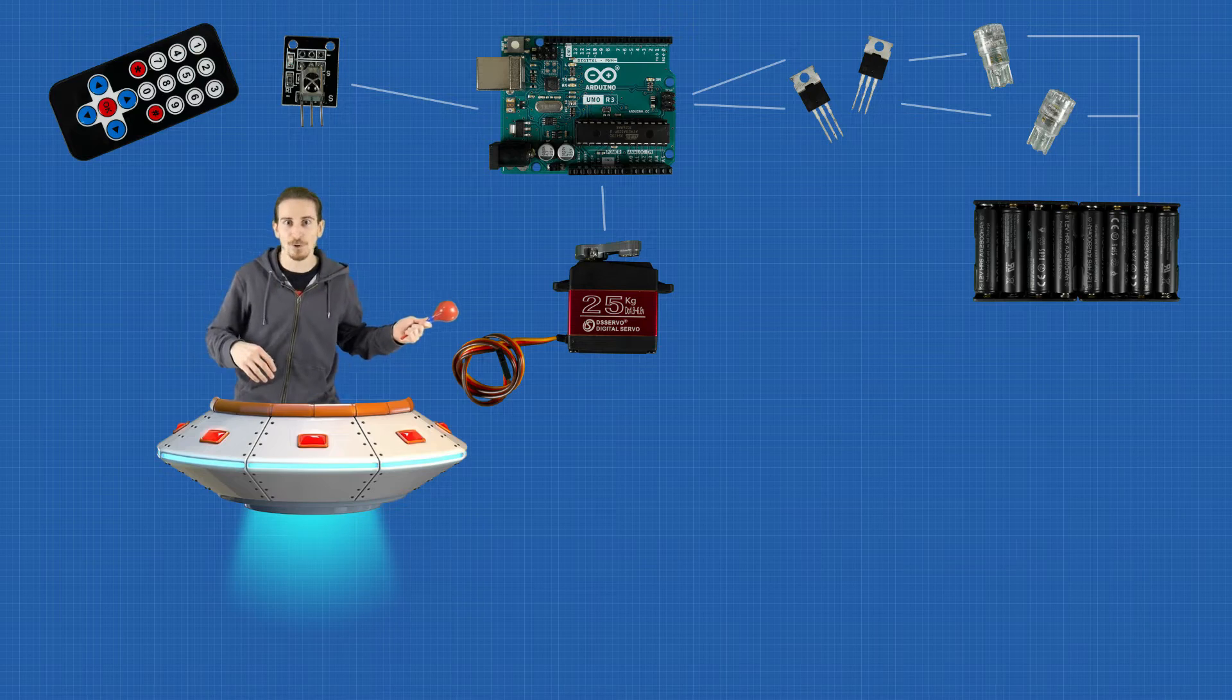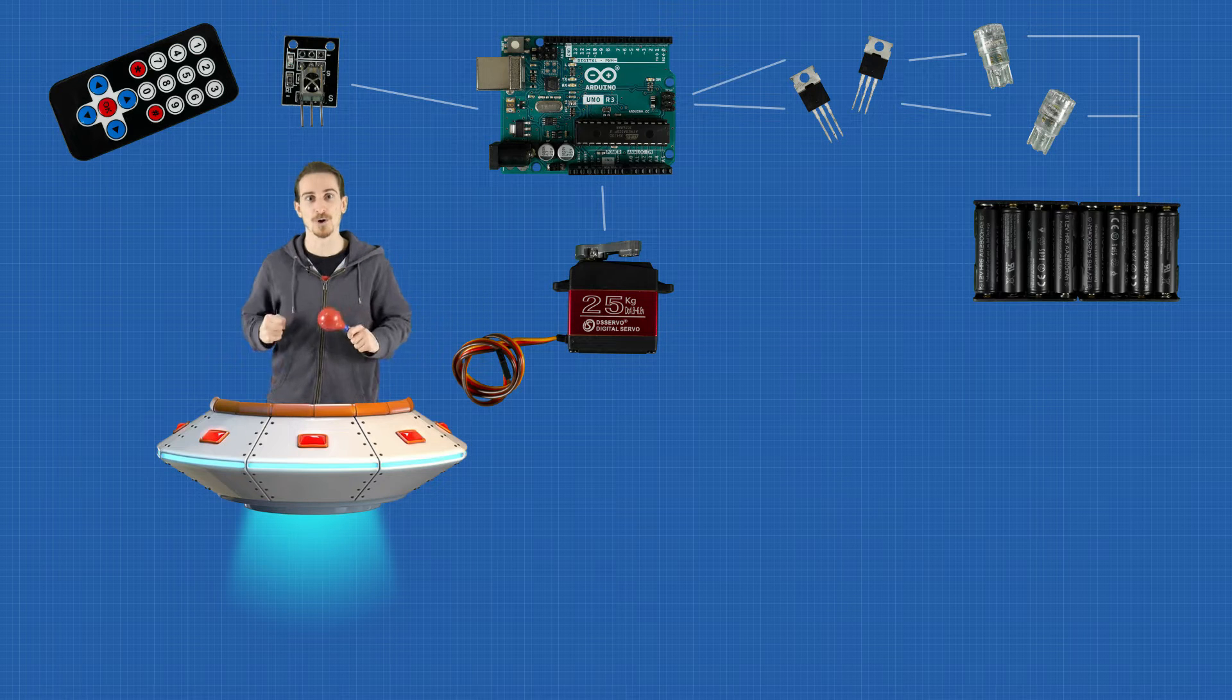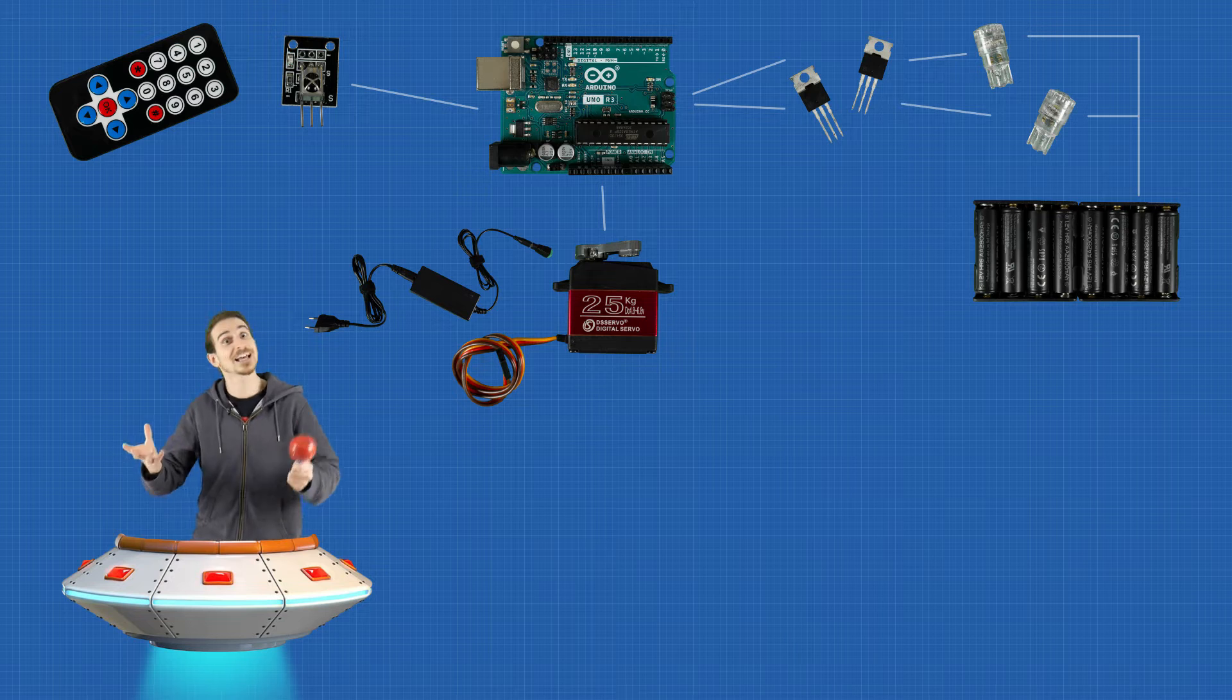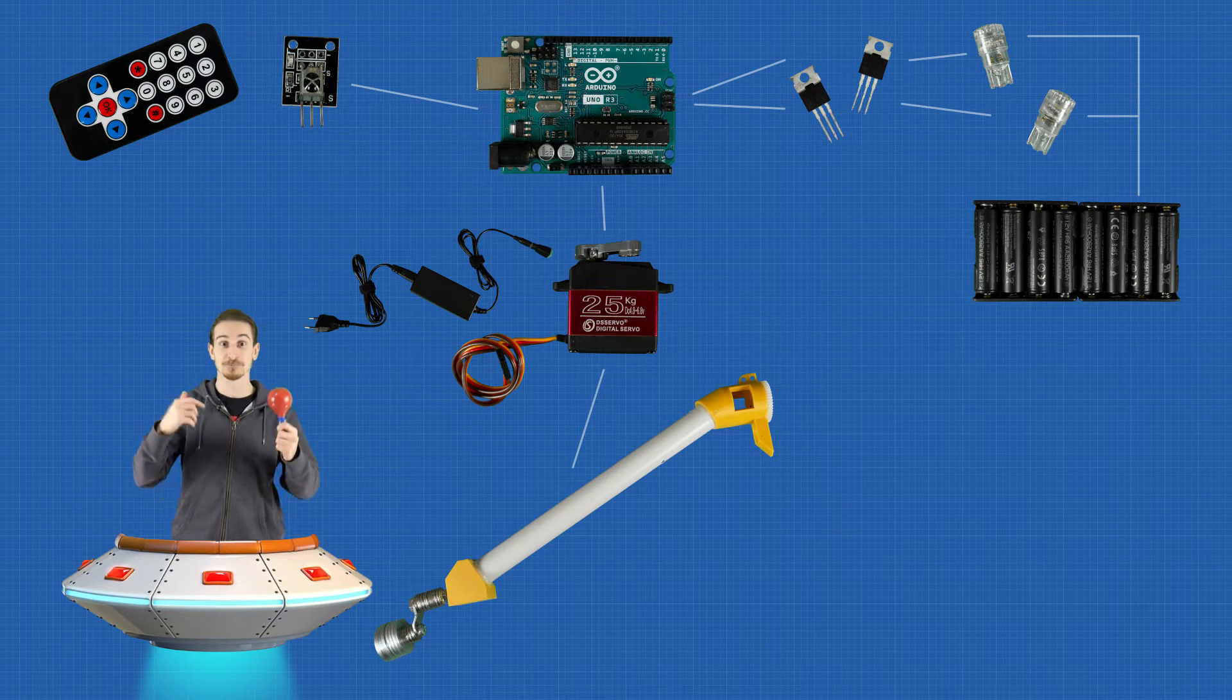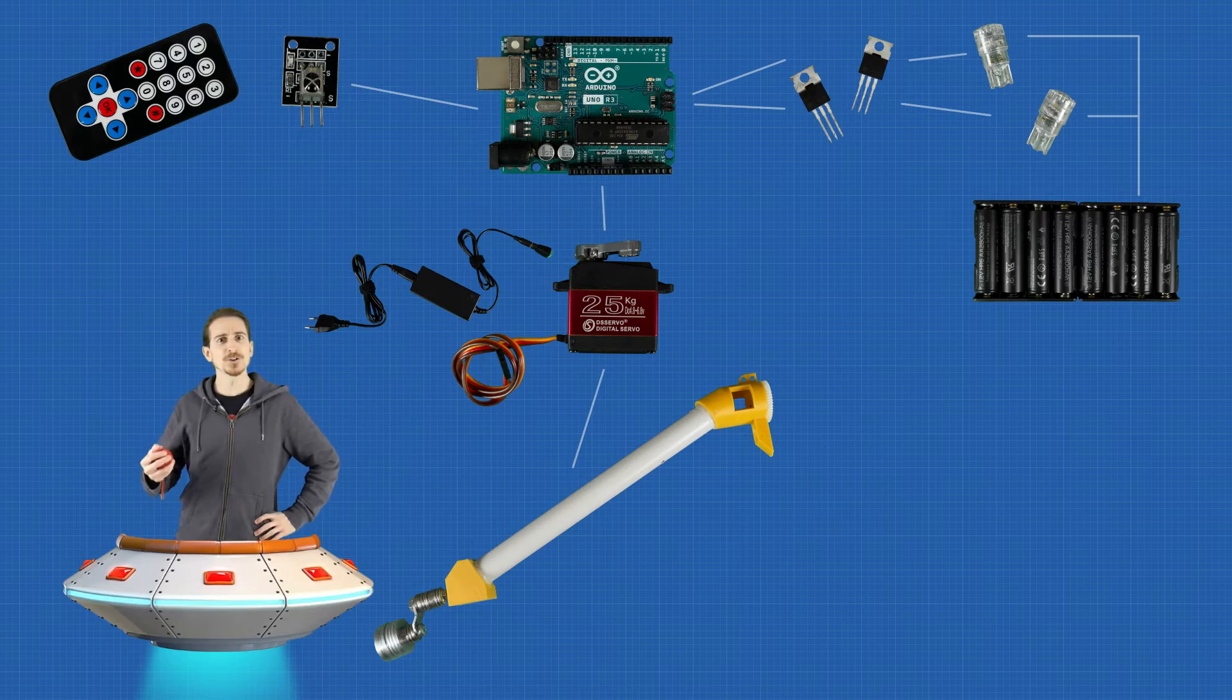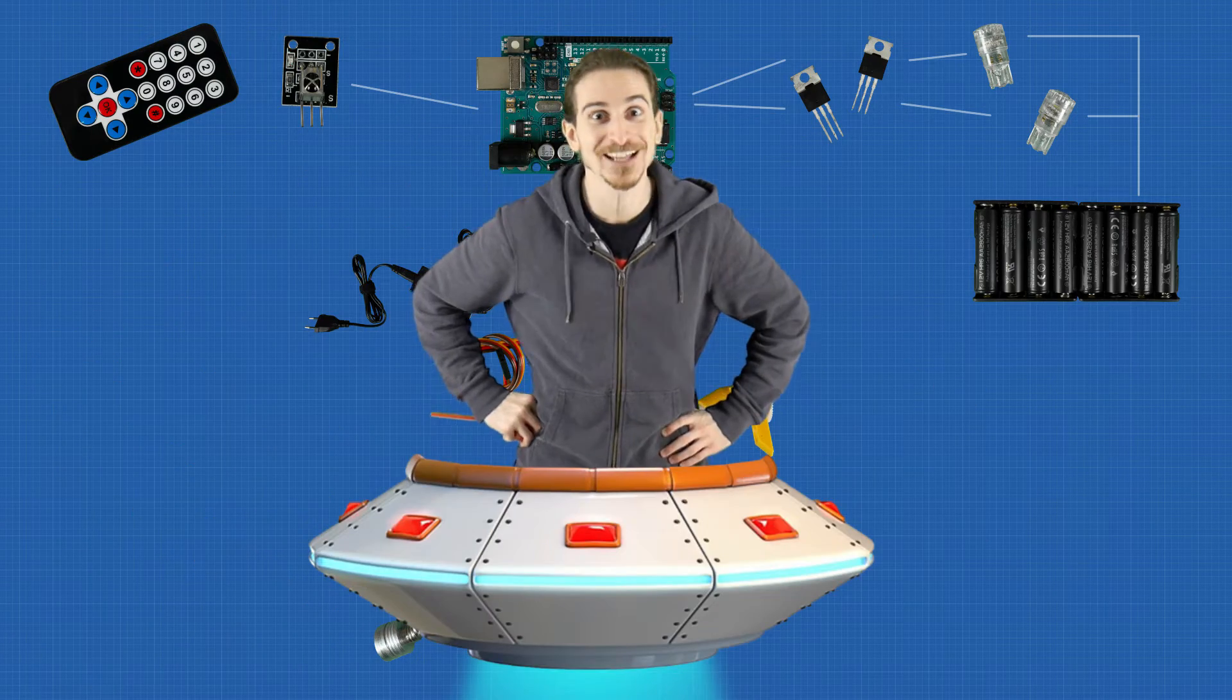This chonky boy over here is a thick servo motor, powered by an equally thick power supply. Is this oversized? Yes, because it moves a tiny arm made of PVC pipe and 3D printed components. But what does the arm do? Thank you for asking!